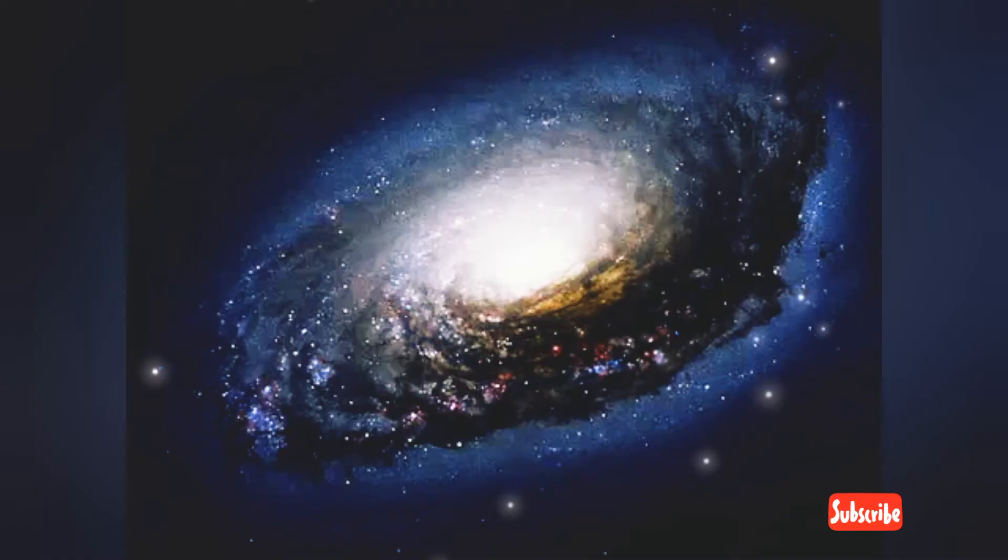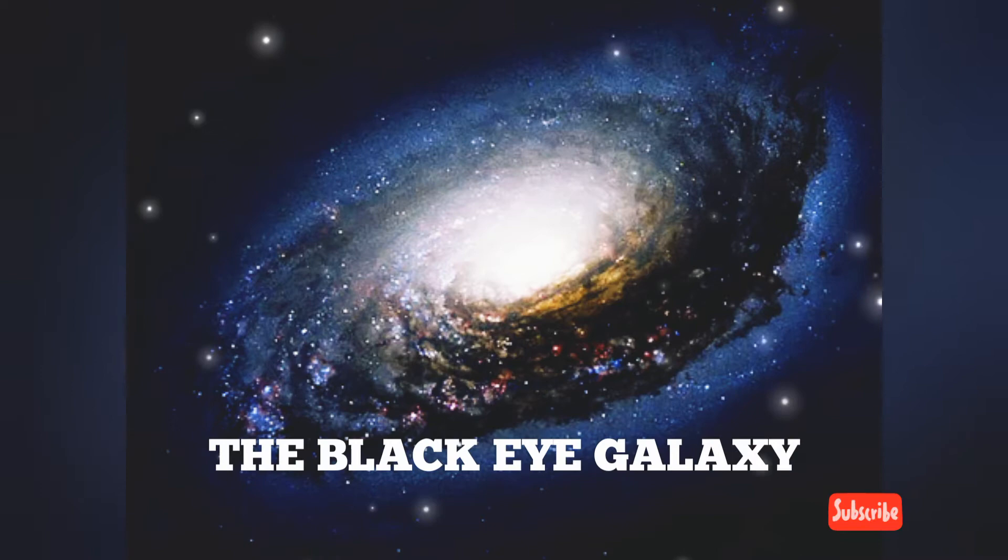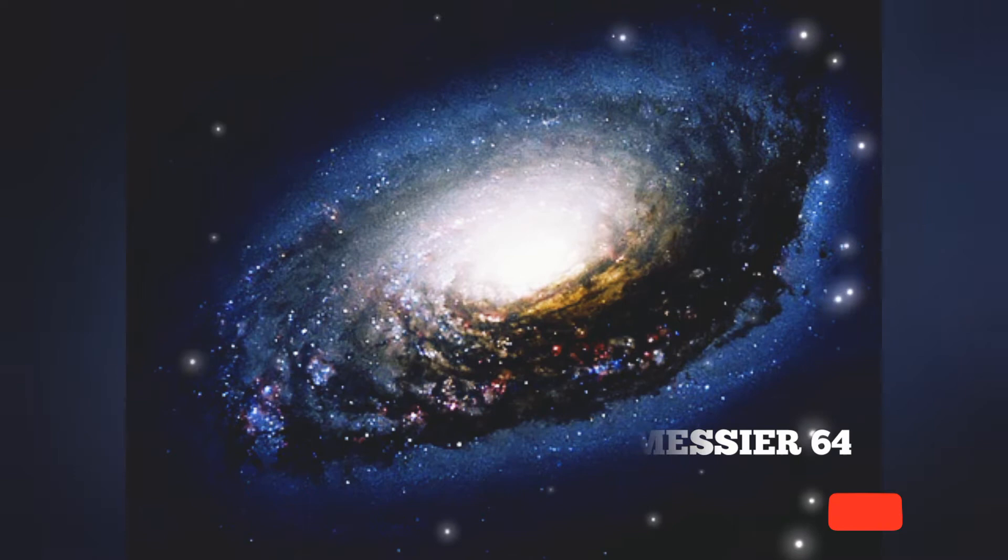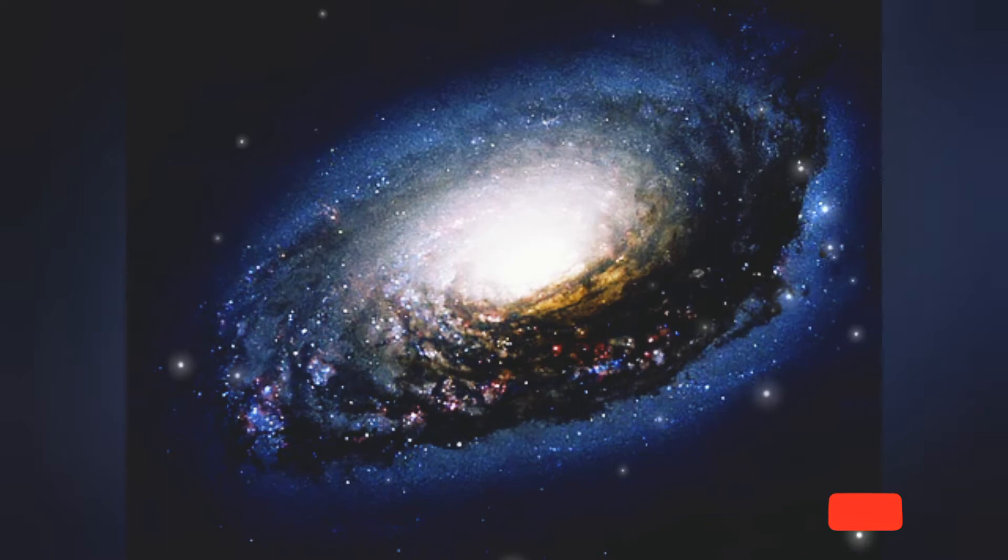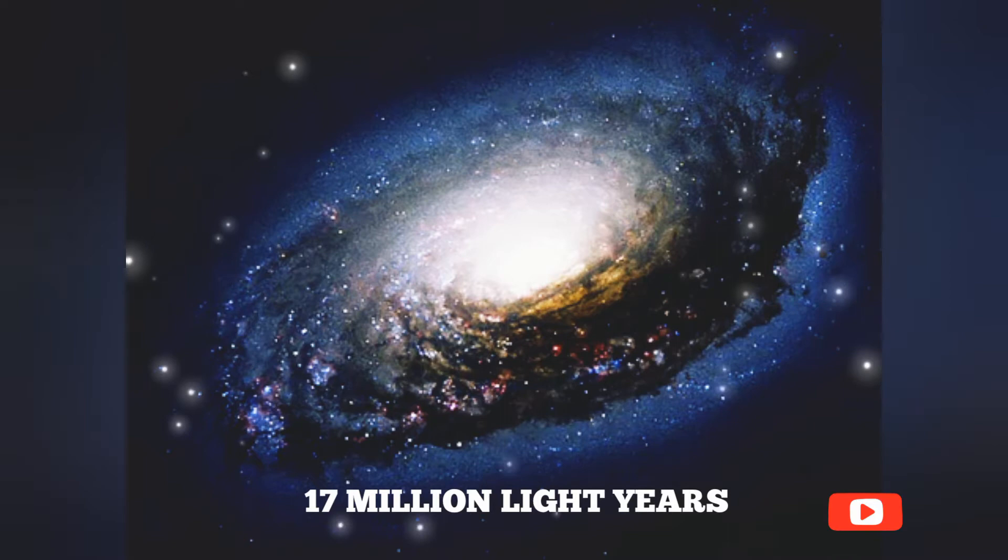The Black Eye Galaxy, also called Evil Eye Galaxy, and designated Messier 64, M64 or NGC 4826, is a relatively isolated spiral galaxy located 17 million light-years away in the northern constellation of Coma-Barneses.